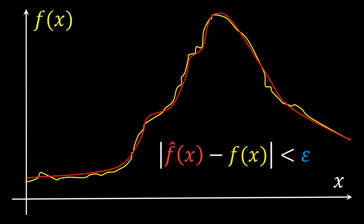Formally, we want that for every input x, the absolute difference of the output of the neural network, denoted here as f hat, is always less than an error epsilon away from the original function, denoted as f.